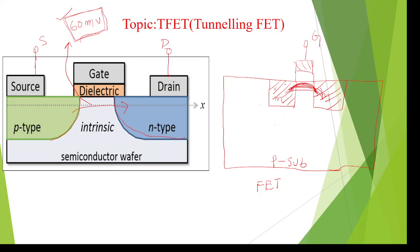In normal MOSFET, the channel from source to drain may be very long, so it requires more threshold voltage to break the junction and allow current to flow. In contrast, the T-FET is tunnel-shaped, which means it requires very less threshold voltage to move current from source to drain.